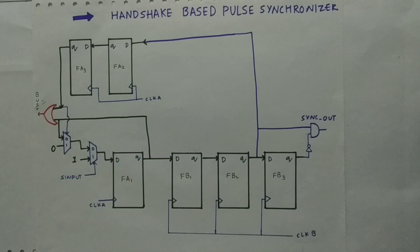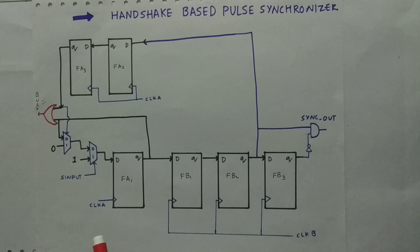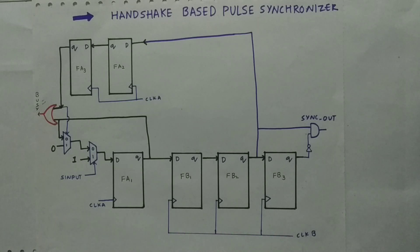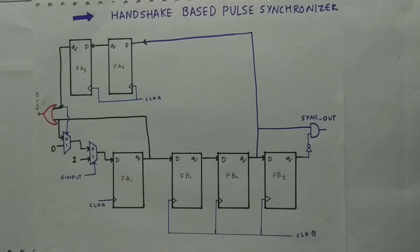What does a pulse synchronizer do? A pulse synchronizer takes a signal pulse from one clock domain and generates that pulse again in another clock domain. Here we are using a handshake mechanism.